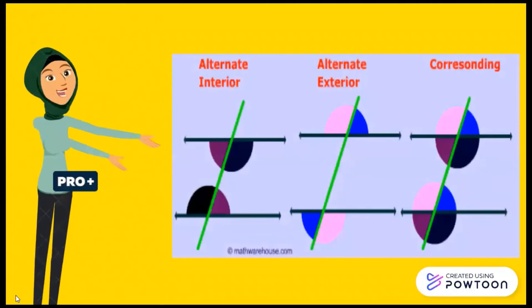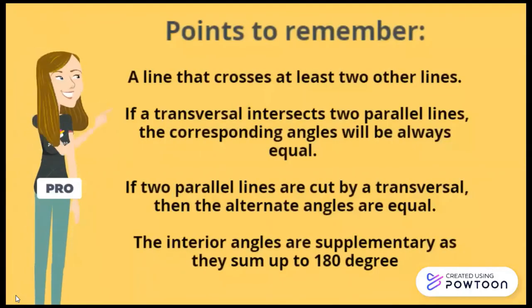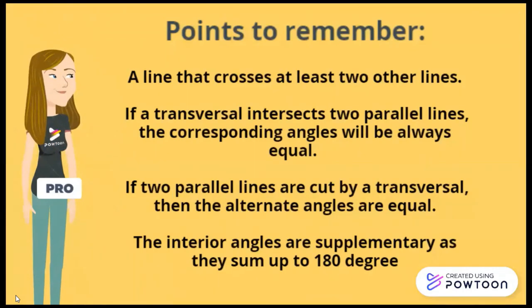These are the three types of angles: alternate interior, alternate exterior, and corresponding angles on parallel lines. Remember, a line that crosses at least two other lines is a transversal. If the transversal intersects two parallel lines, the corresponding angles will be the same. If two parallel lines get cut by a transversal, the alternate angles are equal. Consecutive interior angles are supplementary and sum up to 180 degrees.